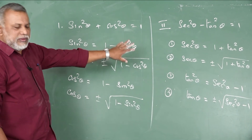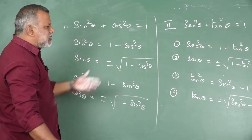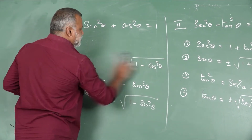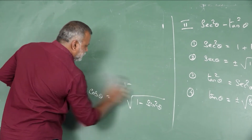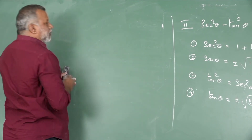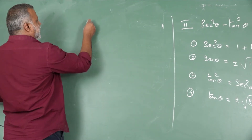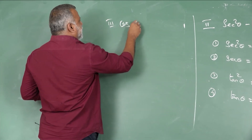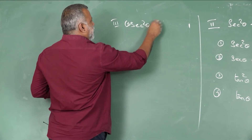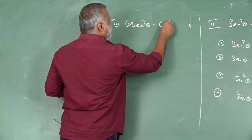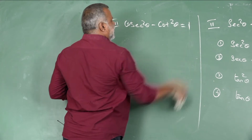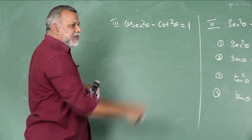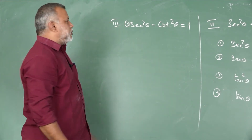These are already well known from your 10th syllabus — just recalling the concepts. Now the third identity: cosec²θ − cot²θ = 1.